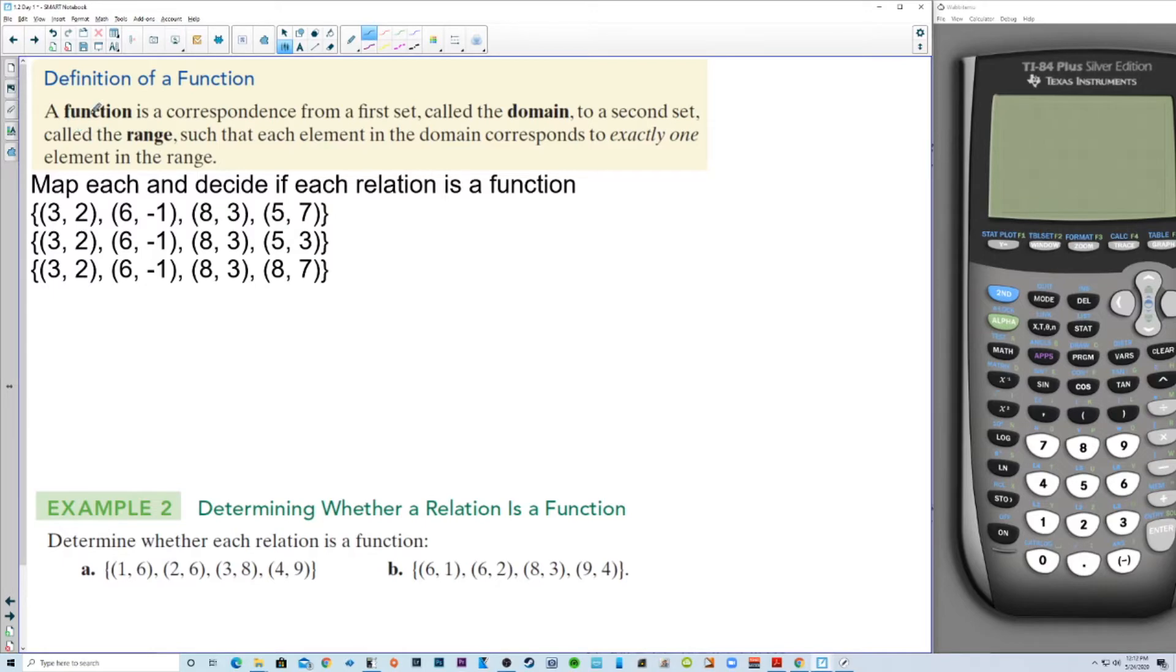315, 80, 80. Oh, we don't have to list that twice because we're just listing the values, not how many times they occur. When listing the domain and range, that's not really an issue. Definition of a function, a function is a correspondence from a first set called the domain to a second set called the range, such that each element in the domain corresponds to exactly one element in the range. So we're going to map each.